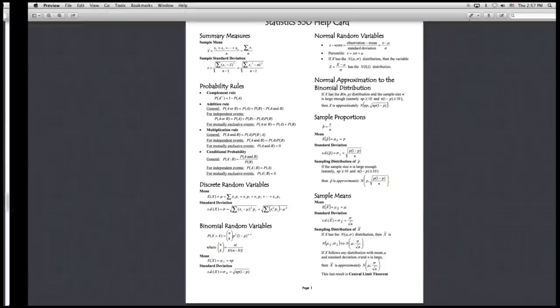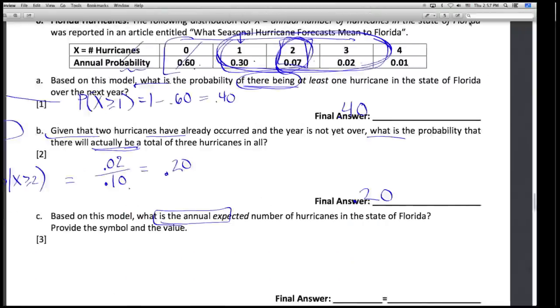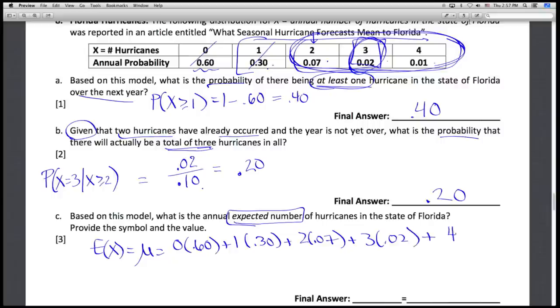The expected value for a random variable, a discrete random variable that we have here, is shown right here. It's a weighted average of those values times their probabilities. So we want to find the expected value of x, or the mean, by taking each value that's possible and weighting it by its probability of occurring. So each value times its probability, and then a calculator to do some of that multiplying for us if we wish, should give us a value that's reasonable. It's got to be somewhere between 0 and 4, and it's probably going to be closer to this lower end where more of the probability is.